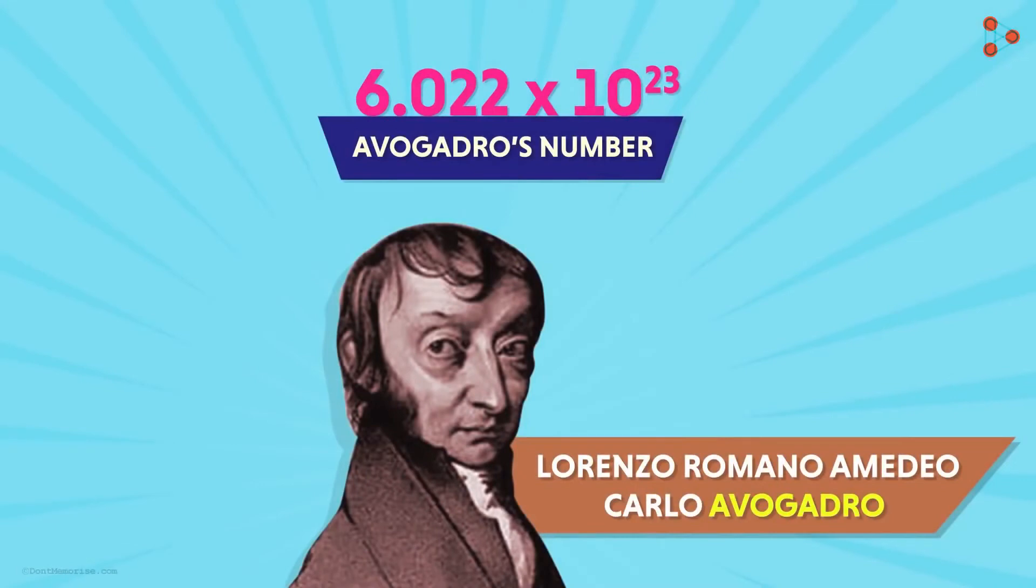Similarly, Avogadro's number is the term used to represent 6.022 times 10 raised to 23 number of any entity.